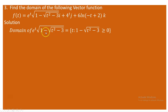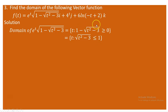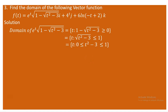For the outer square root, we need 1 - √(t² - 3) ≥ 0, meaning √(t² - 3) ≤ 1. Since the radical is non-negative, we get 0 ≤ √(t² - 3) ≤ 1. Squaring all parts gives 0 ≤ t² - 3 ≤ 1, and adding three throughout: 3 ≤ t² ≤ 4.